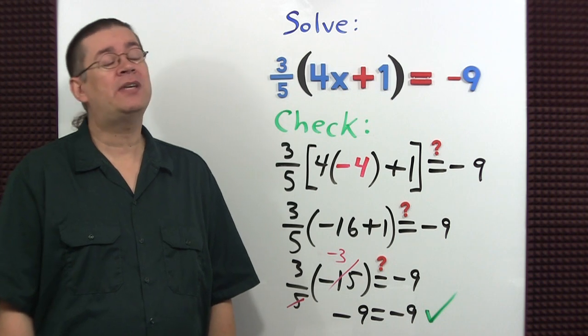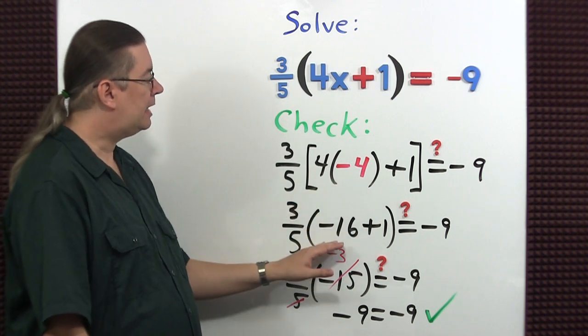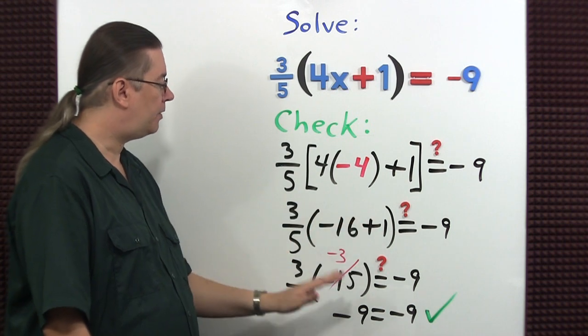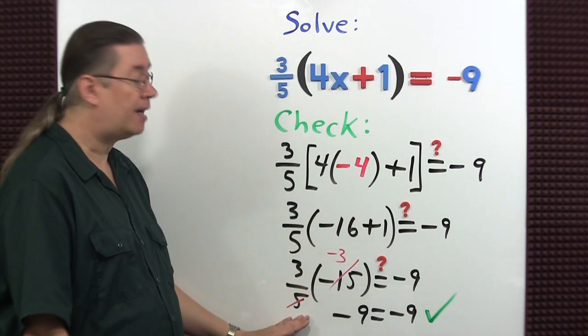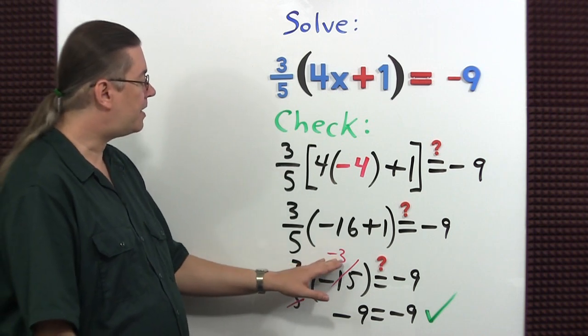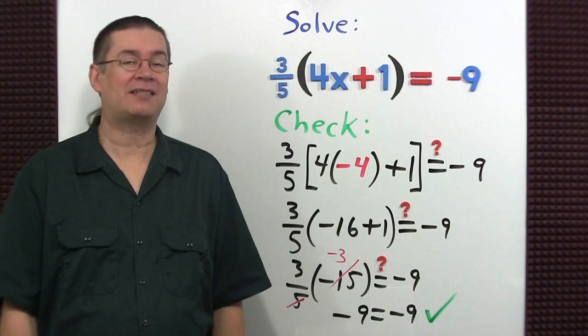When you do the check, just be extra careful when you apply the order of operations. Here I multiply 4 times negative 4 to get negative 16. I added 1 to it to get negative 15. Then I recommend you divide negative 15 by 5 first. This gives you negative 3 times 3 is negative 9 which is equal to negative 9. It checks.